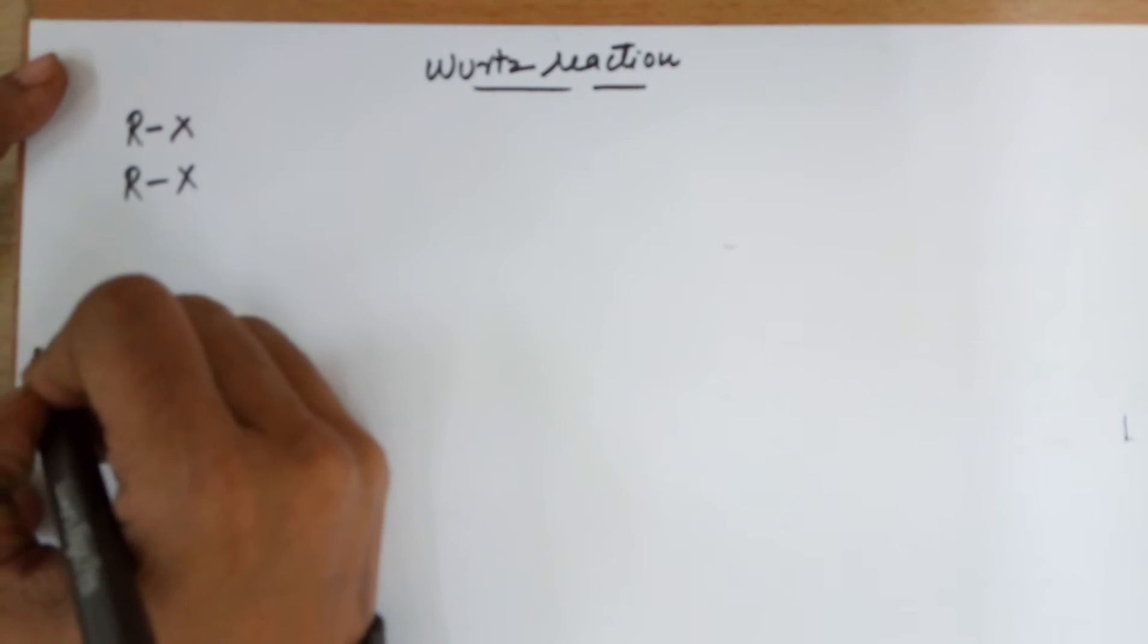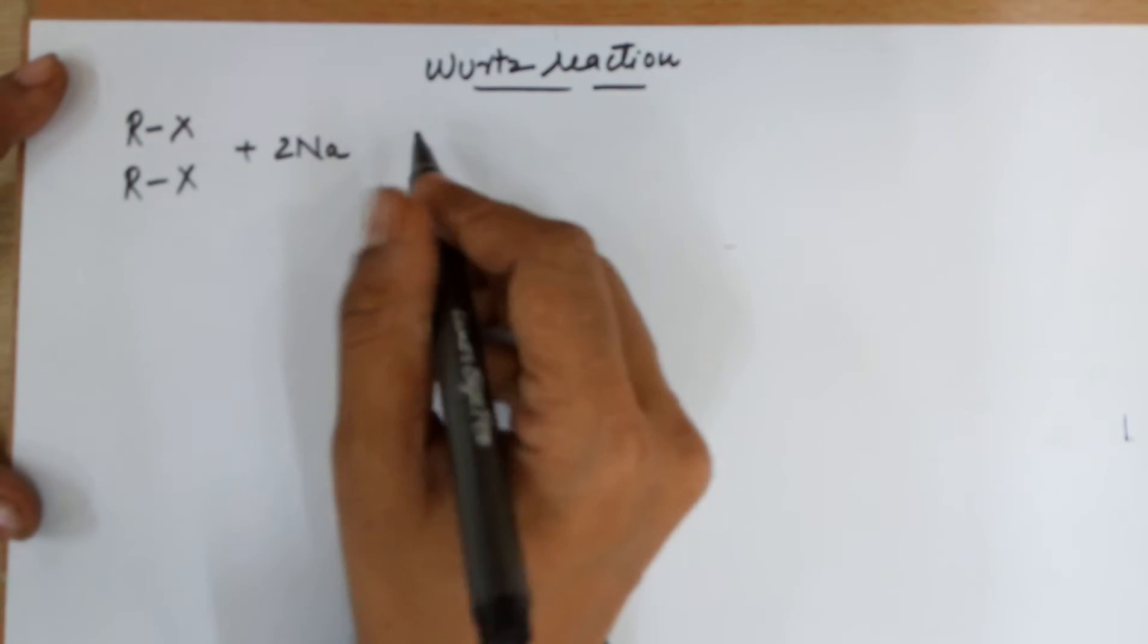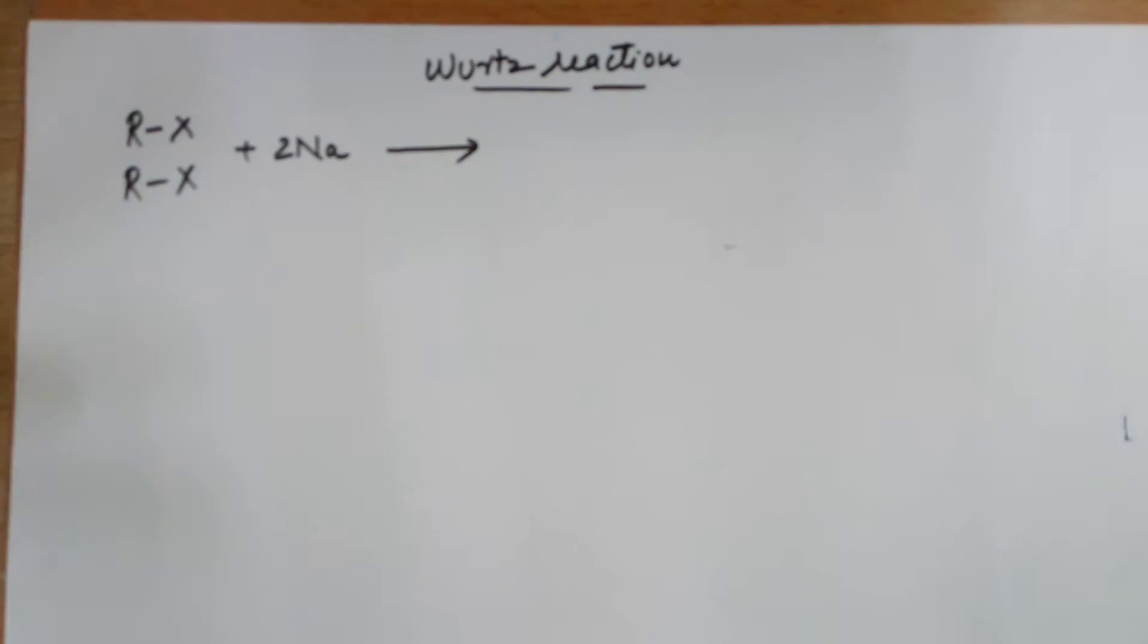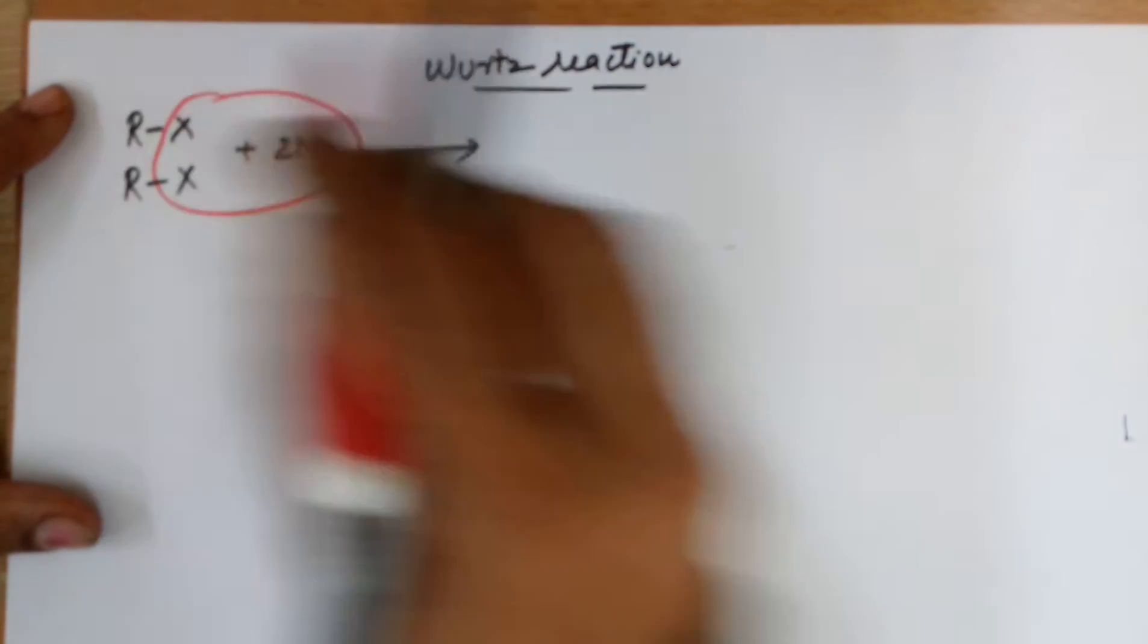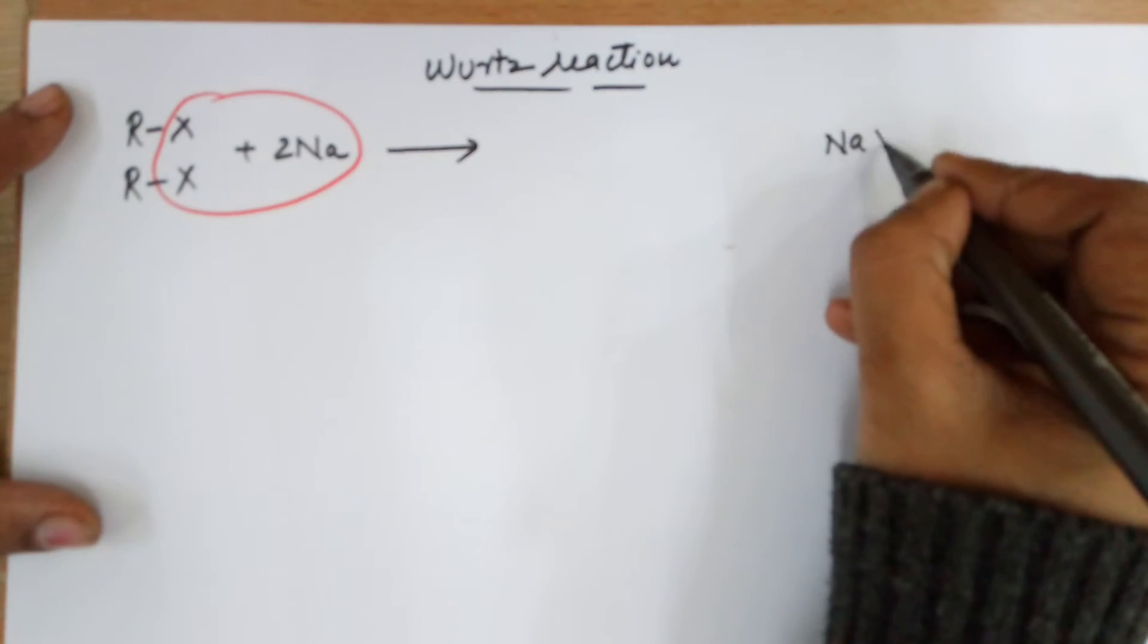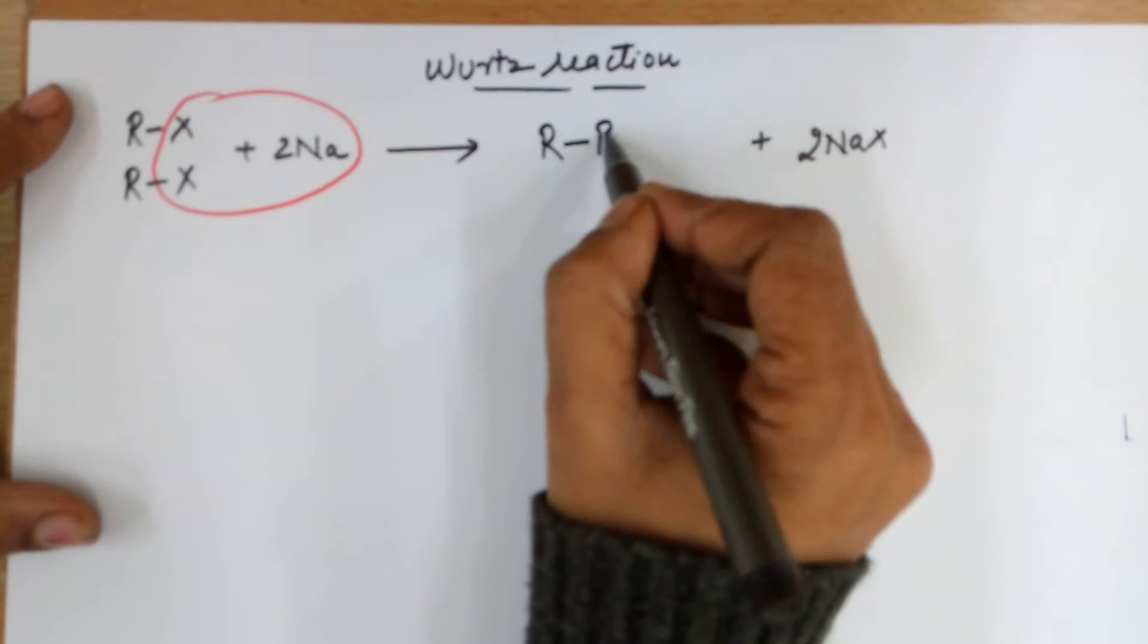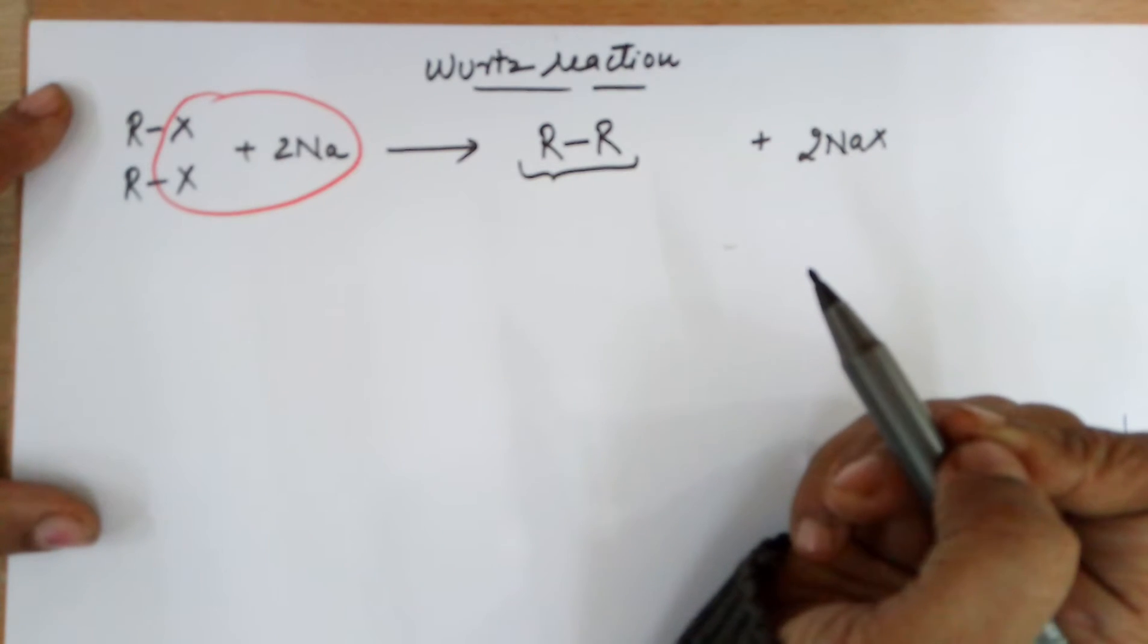Taking two moles of the alkyl halide with two moles of sodium metal, it leads to the loss of two moles of sodium halide which becomes a byproduct, and the final main organic product that you are interested in is your hydrocarbon RR.